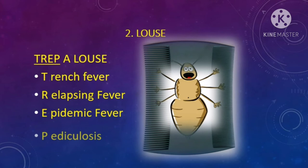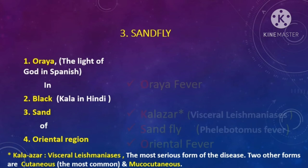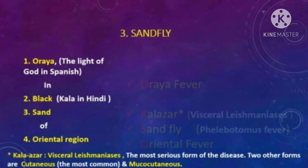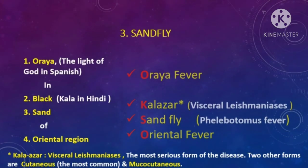Now we will learn a mnemonic for diseases caused by the sand fly: 'Auraya in Black Sand of Oriental Region.' Auraya stands for Oroya fever, Black — meaning 'kala' in Hindi — stands for kala-azar, also known as visceral leishmaniasis, Sand stands for sand fly fever, and Oriental Region stands for oriental sore.